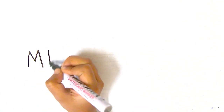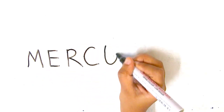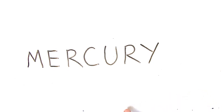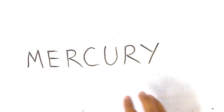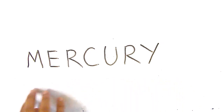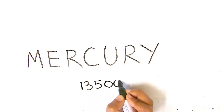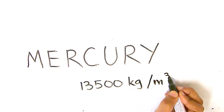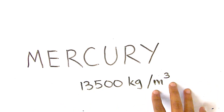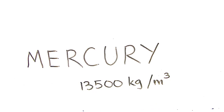One of the highest density liquids known is mercury, which is actually a metal. Mercury density is about 13,500 kilograms per meter cube — more than 10 times higher than water. So water is 1000 kg, honey is roughly 1500 kg, and mercury is 13,500 kilograms per meter cube.